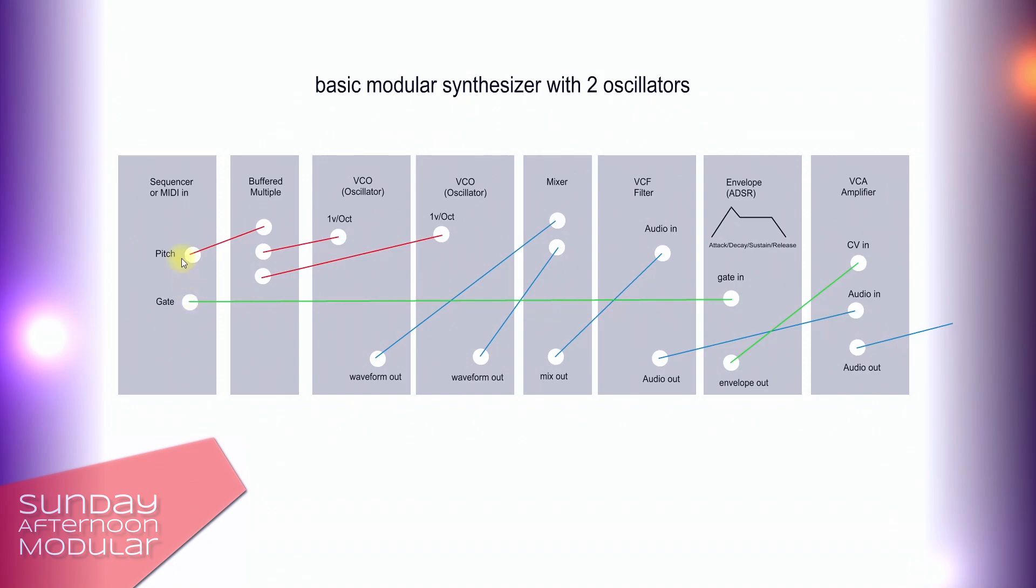Now the pitch signal gets patched to the 1V per octave input of the oscillator. This is the red line. Since we have two oscillators in this setup we need to split the pitch signal. We do this with a buffered multiple.